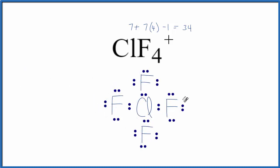At this point, if you count up all these valence electrons, we've only used 32. And remember, we have 34 total valence electrons for the ClF4 plus Lewis structure. So we've got to figure out where to put these extra 2 valence electrons.